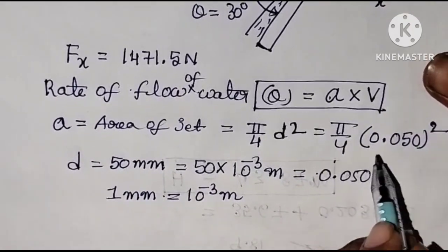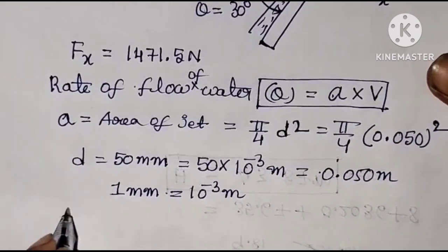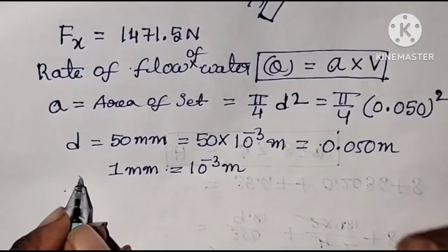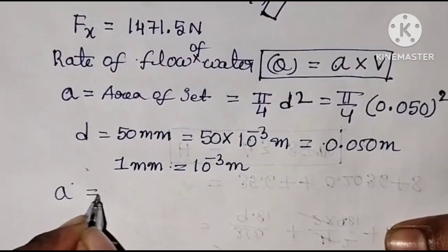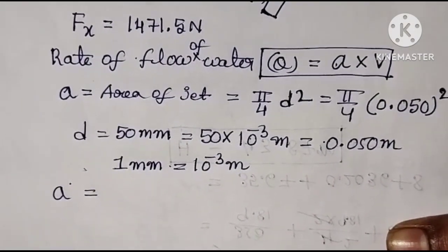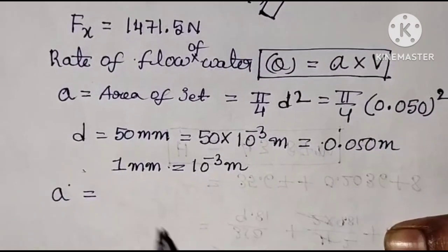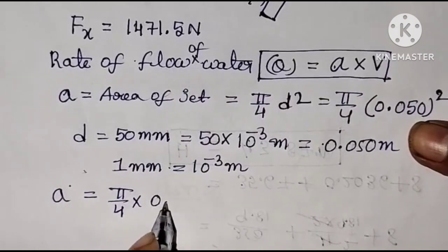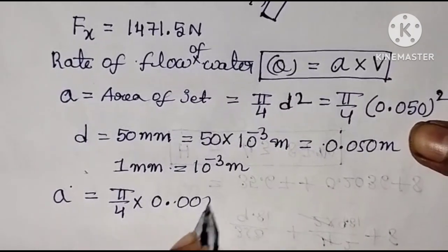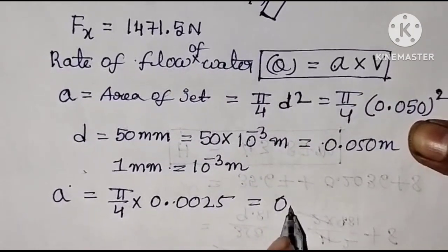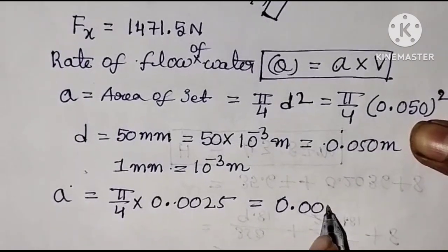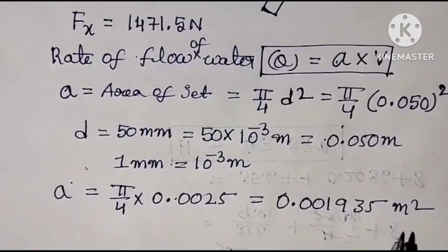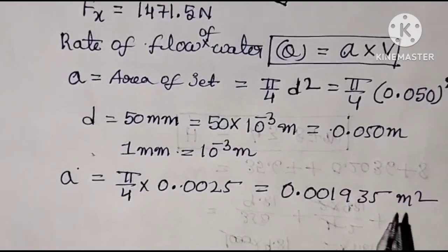Calculating the area of the jet: A = π/4 × (0.050)² = π/4 × 0.0025. The result is A equals 0.001963 m².